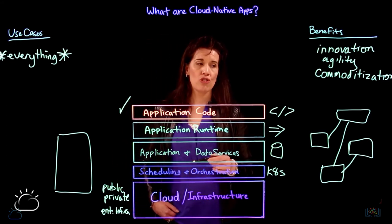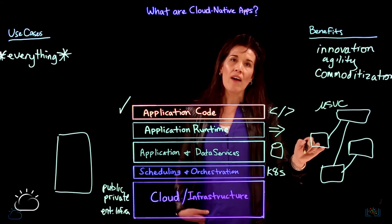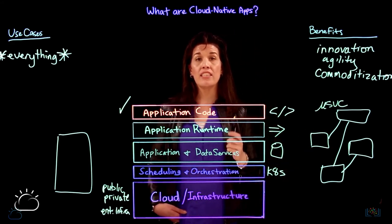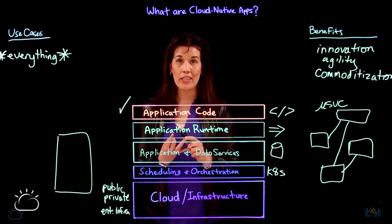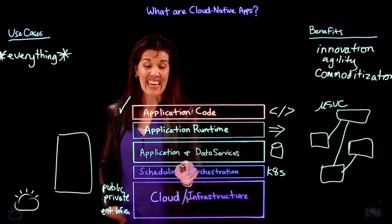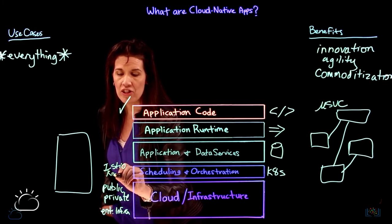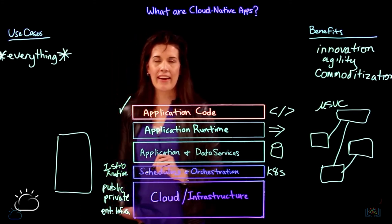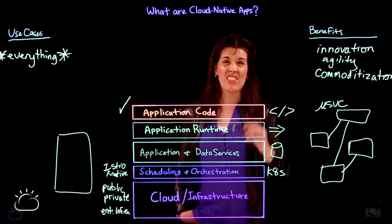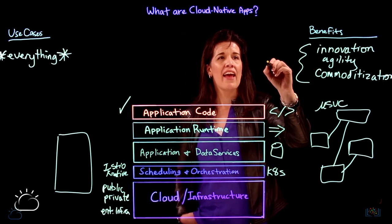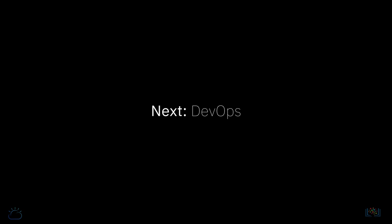We also need things like distributed tracing. In the microservices world, we have a lot of moving parts, meaning we'll need to leverage services core to the system like load balancing, service discovery, and routing. These are commoditized with things like Istio and with the emergence of newer projects like Knative. To sum it all up, cloud-native apps are all about enterprise and engineering at scale. In the next video, we'll take a look at DevOps.